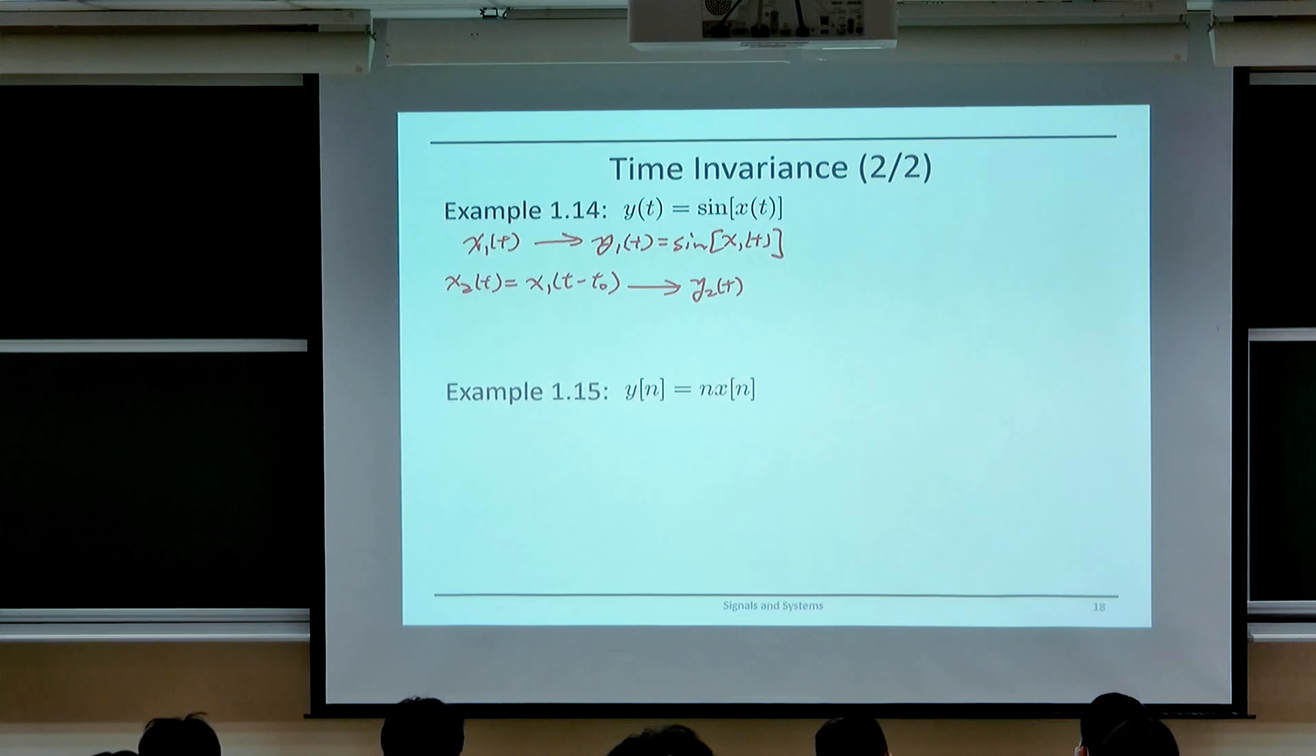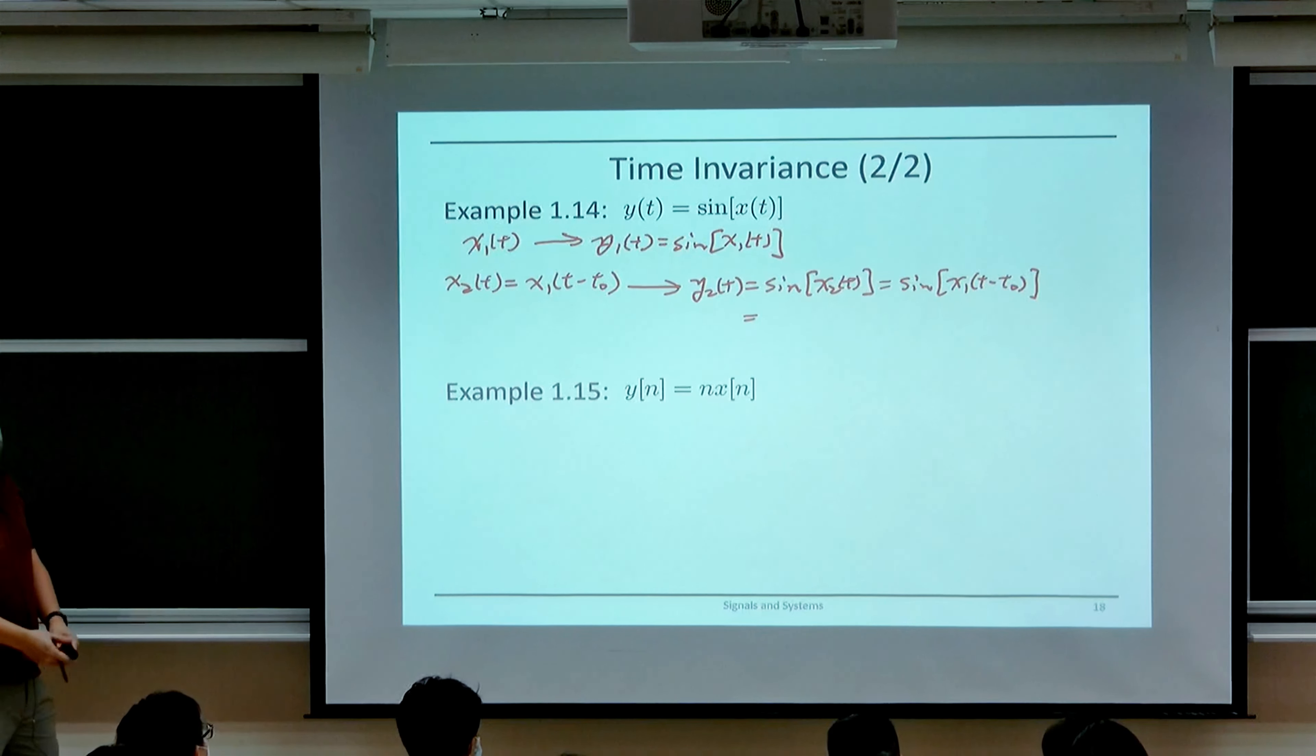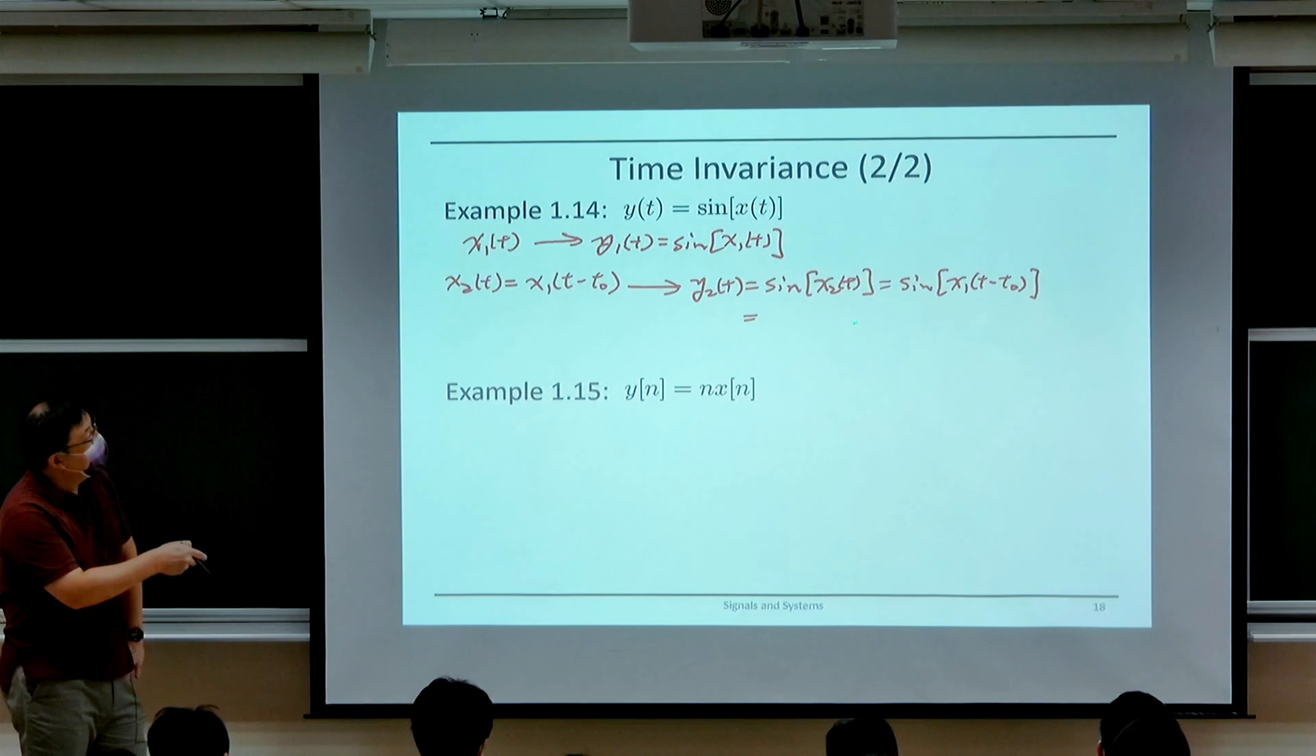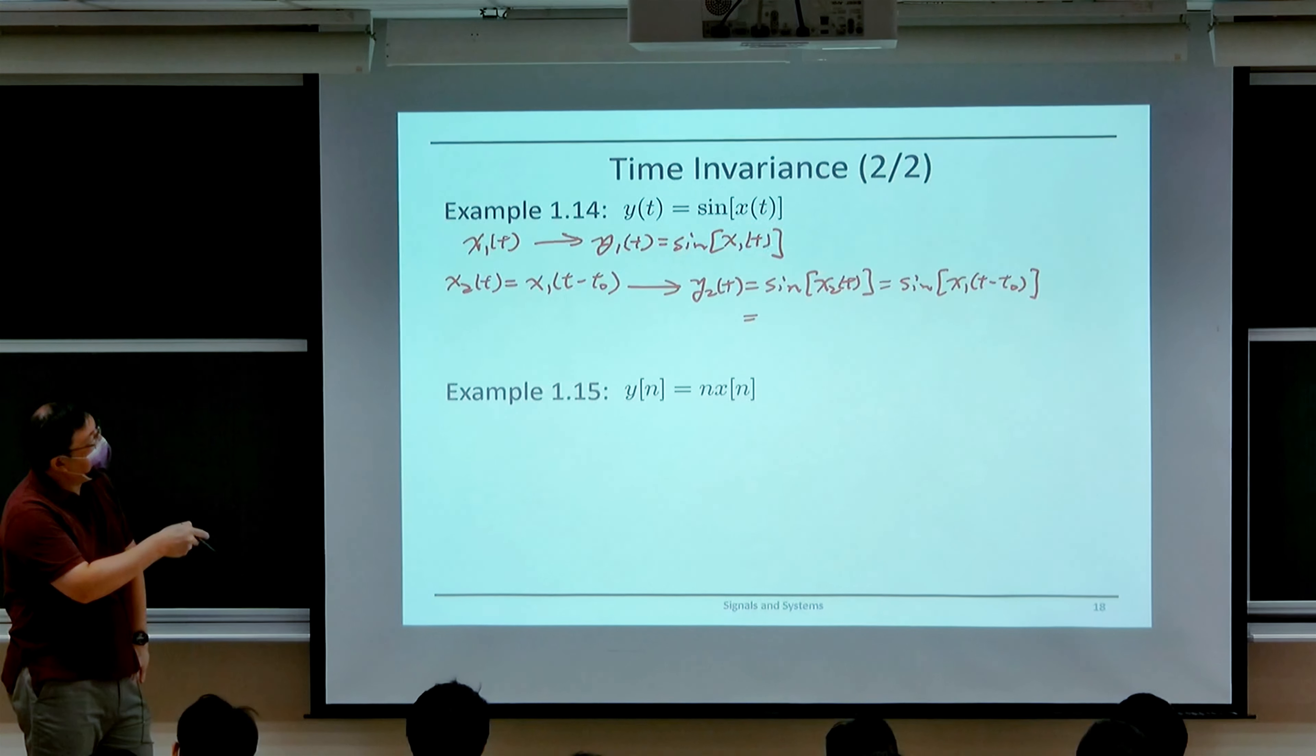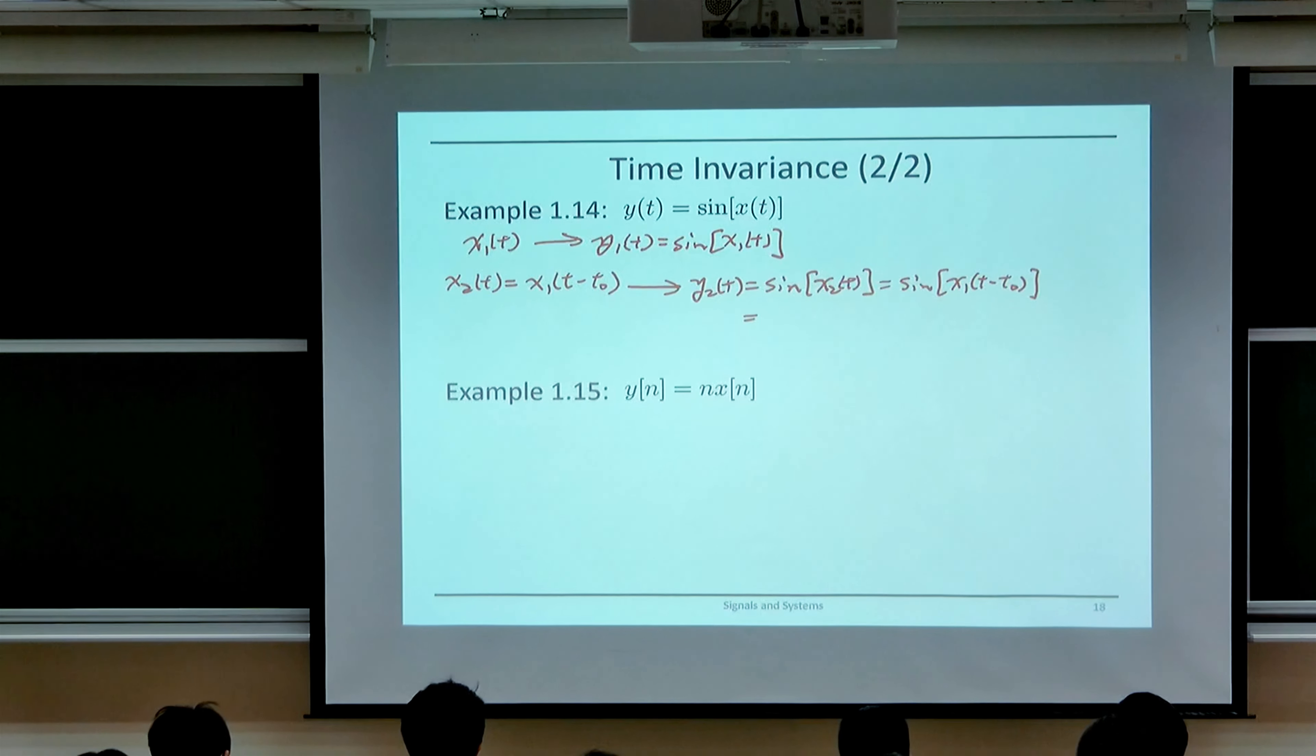So we need to verify if this is true or not. We just plug in x₂(t) inside here, so this is equal to sine of x₂(t), which is equal to sine of x₁(t - t₀). And sine of x₁(t - t₀) is just y₁(t - t₀).